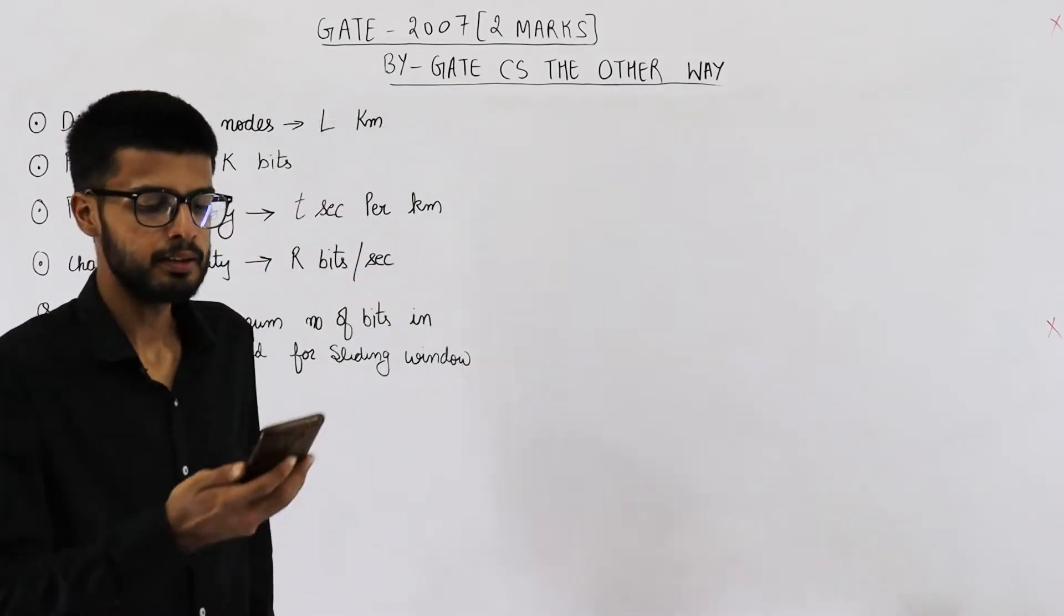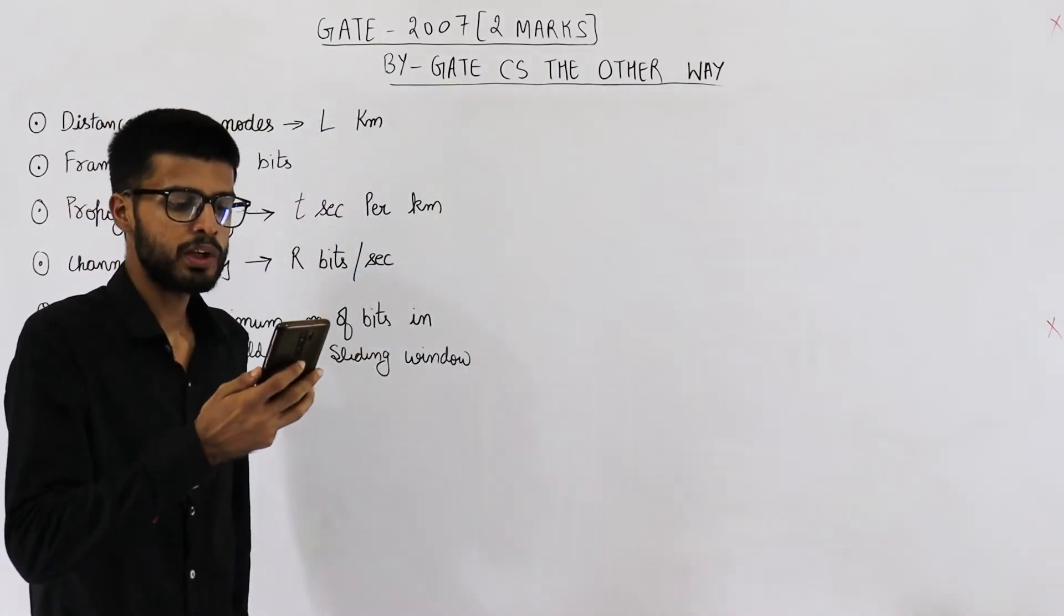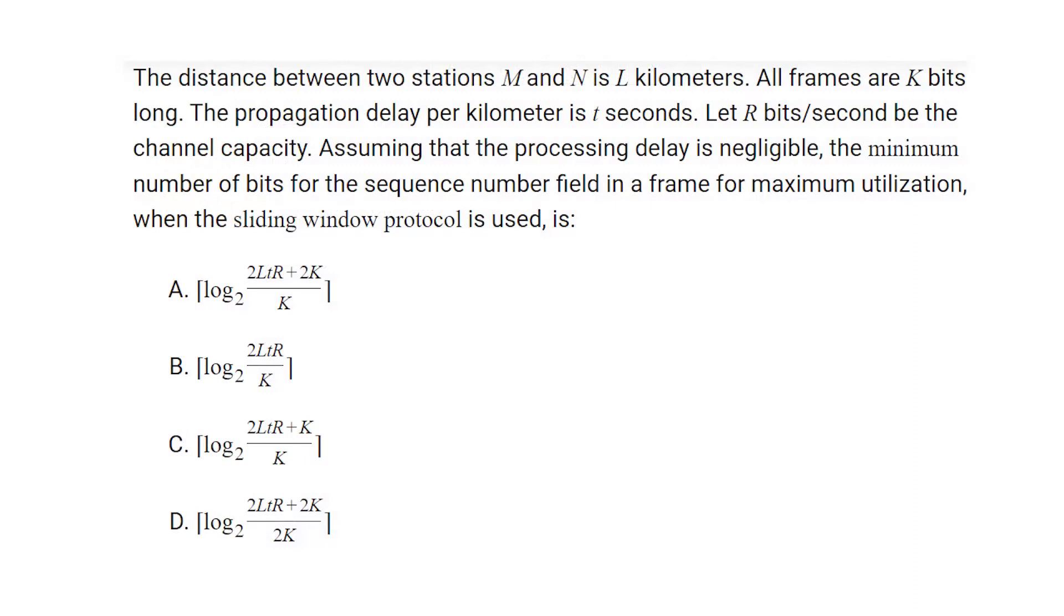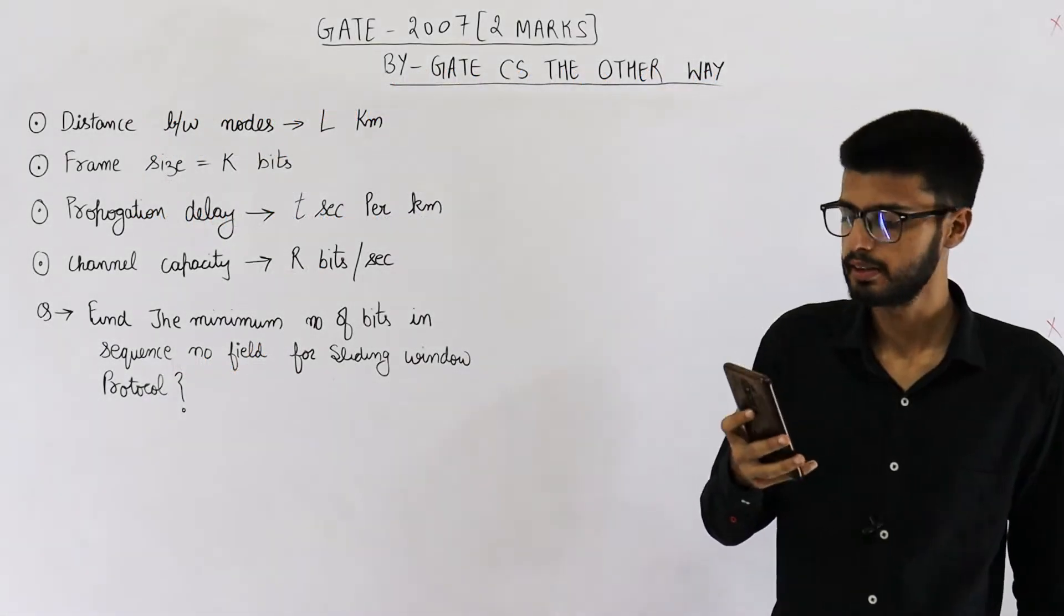So they are saying, the distance between two stations M and N is L kilometers. All the frames are K bits long. The propagation delay per kilometer is T seconds. Let R bits per second be the channel capacity. Assuming that processing delay is negligible, the minimum number of bits for sequence number field in a frame for maximum utilization when the sliding window protocol is used.